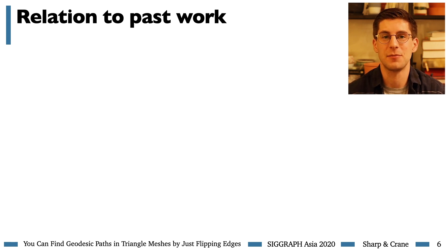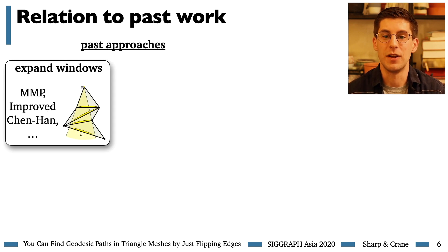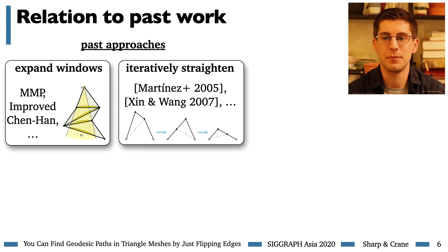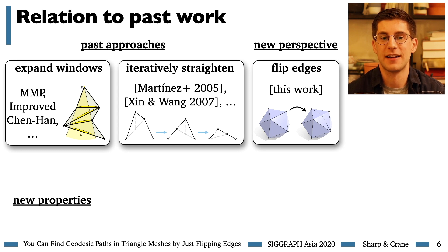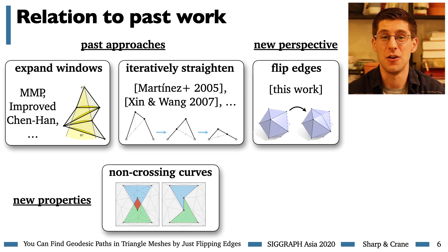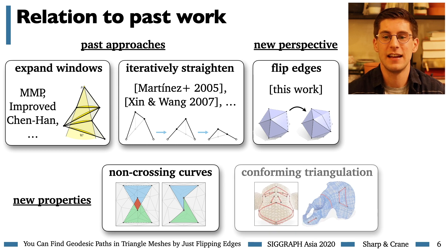There's been a great deal of past work on finding geodesics. Most methods fall broadly into two categories: window-based methods, which expand an outward search, and iterative straightening schemes, which repeatedly shrink some Lagrangian representation of a curve. Our approach is quite different — we find geodesics by flipping edges. Furthermore, our algorithm guarantees that no new crossings will be created by the straightening process, and it generates a triangulation containing the geodesic that's useful for downstream tasks.